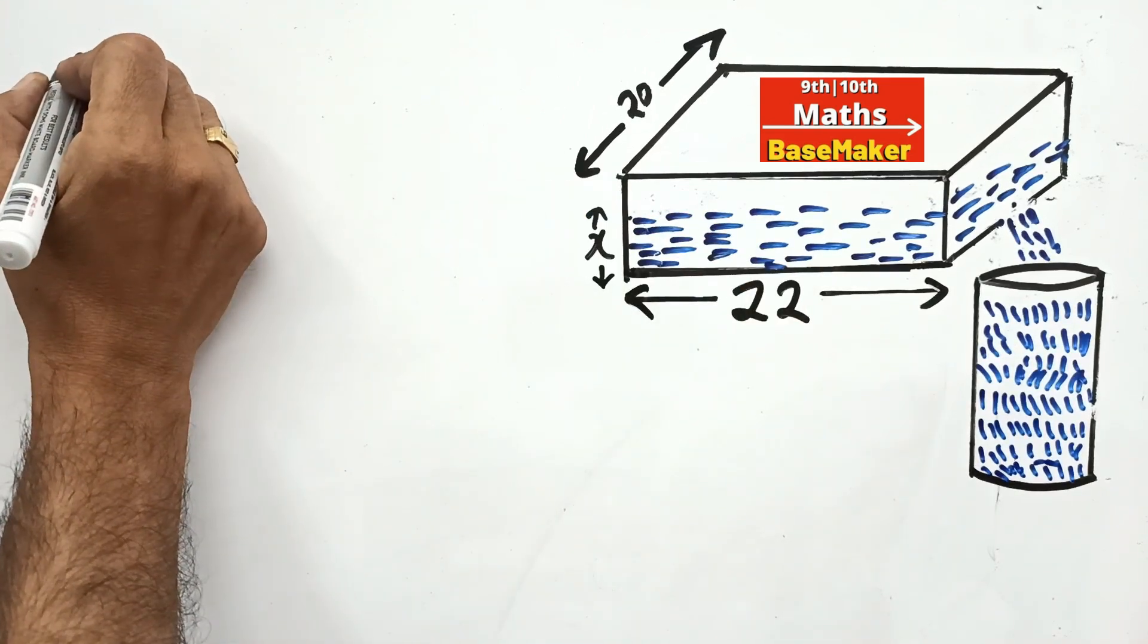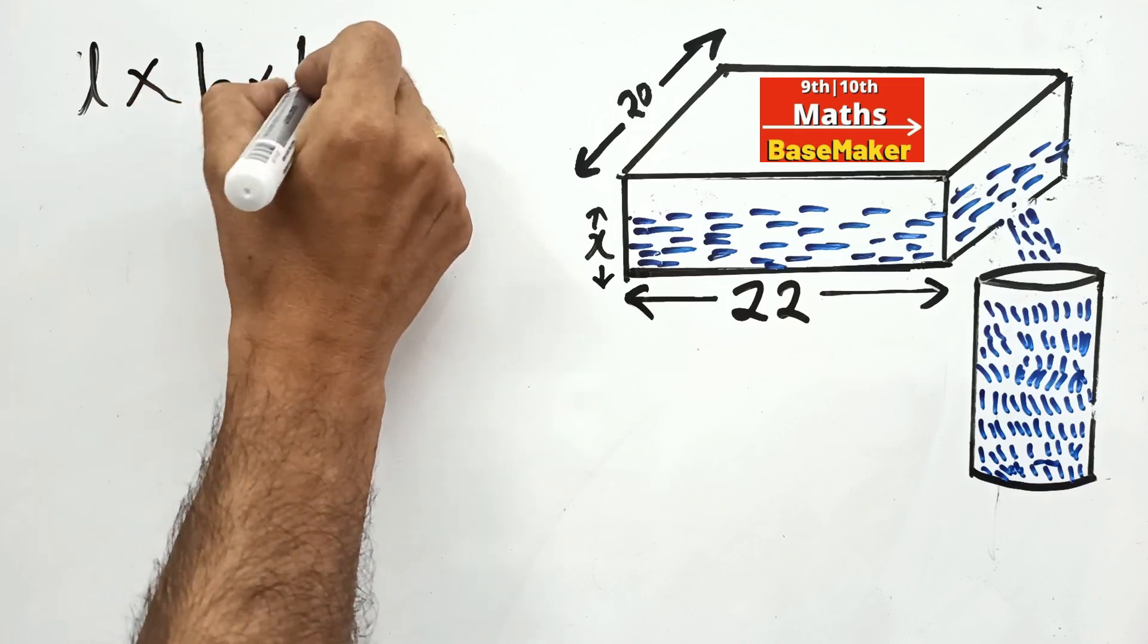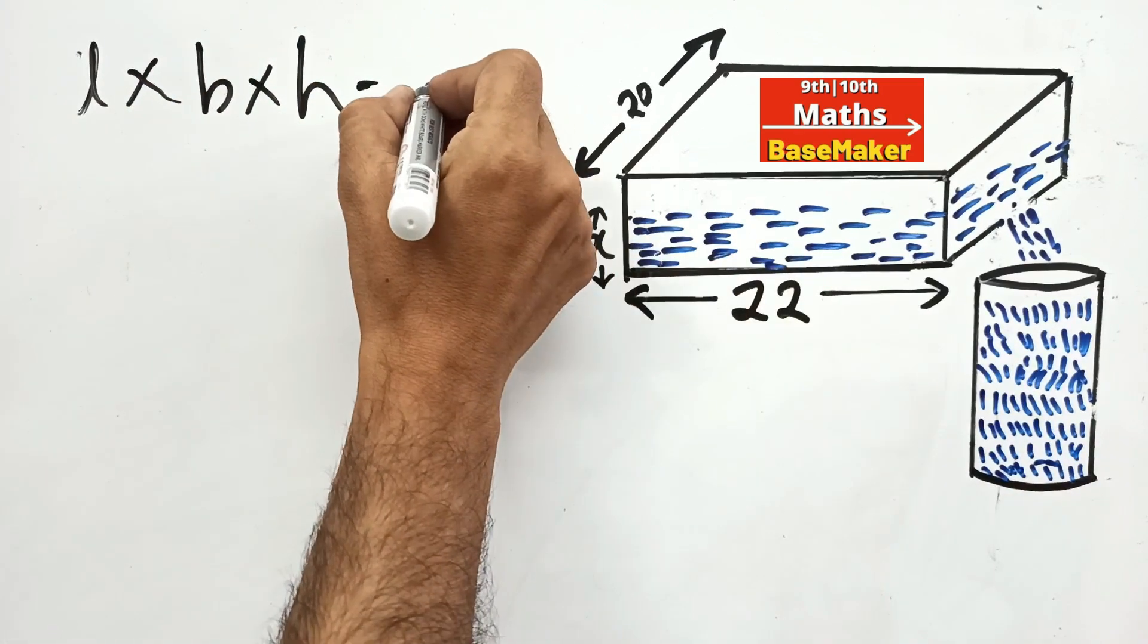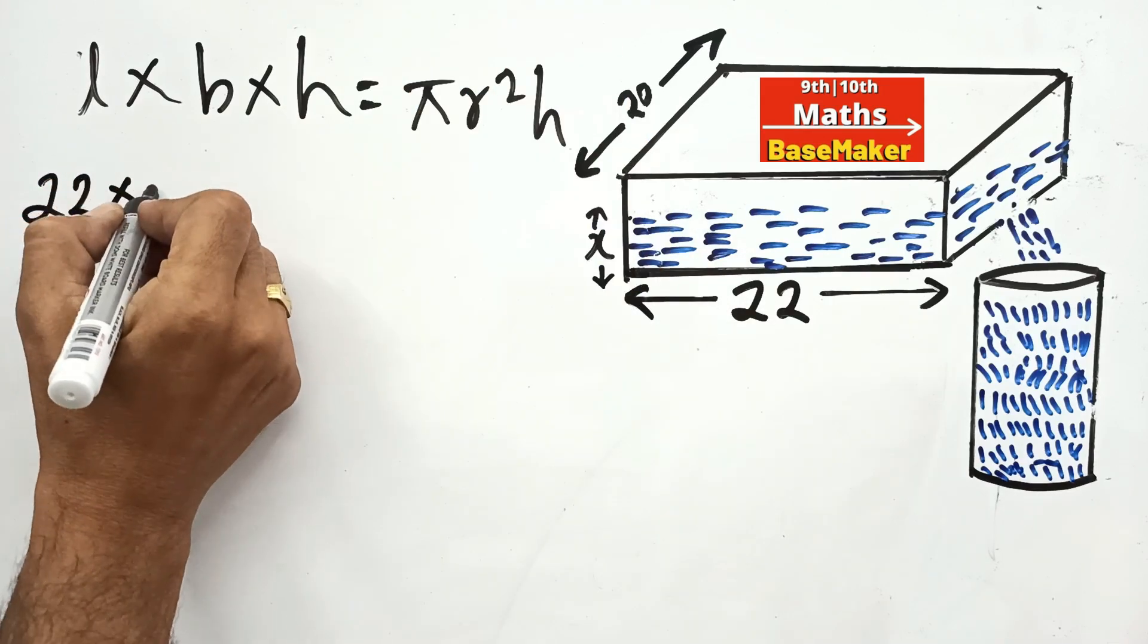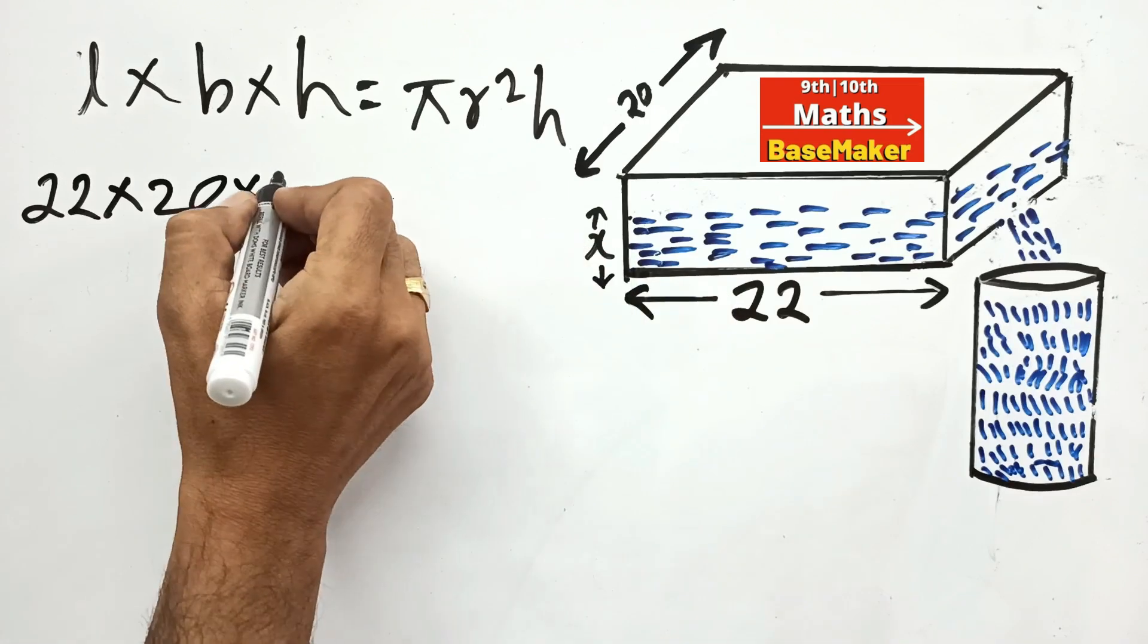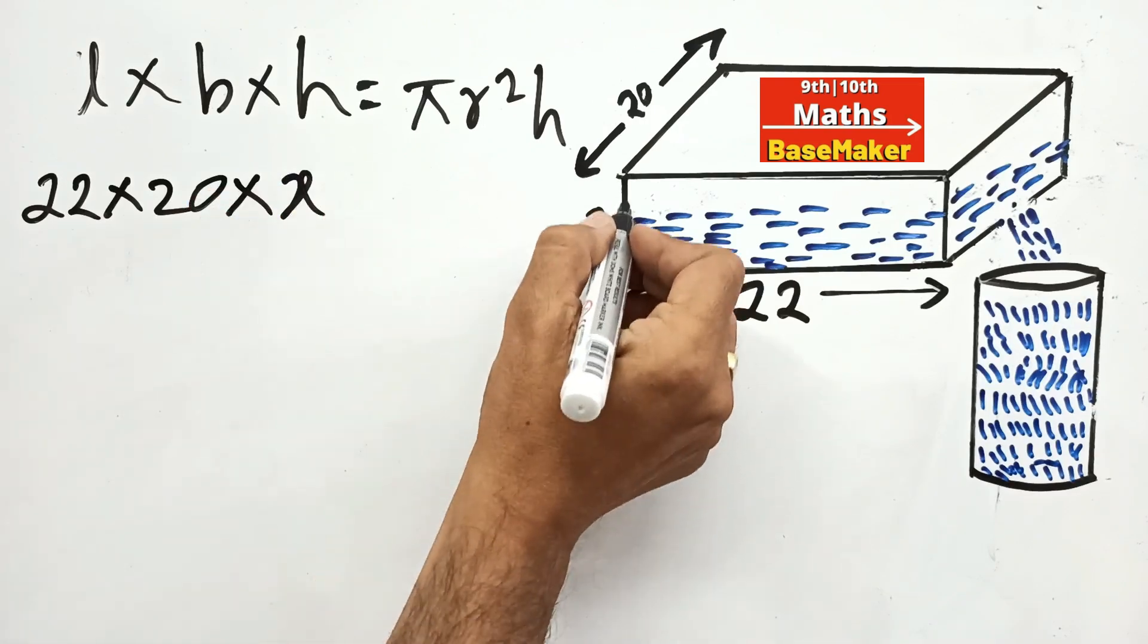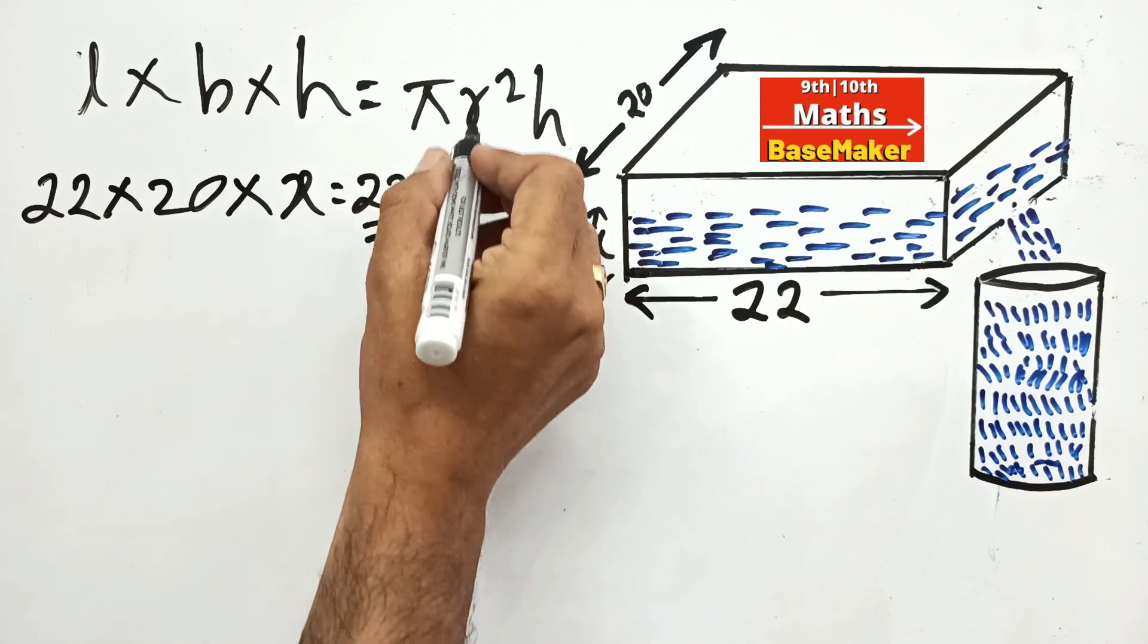Volume of water on roof is length into breadth into height, equal to volume of water in cylindrical vessel pi r squared h. So 22 into 20 into X, the height of water, is equal to 22 by 7.